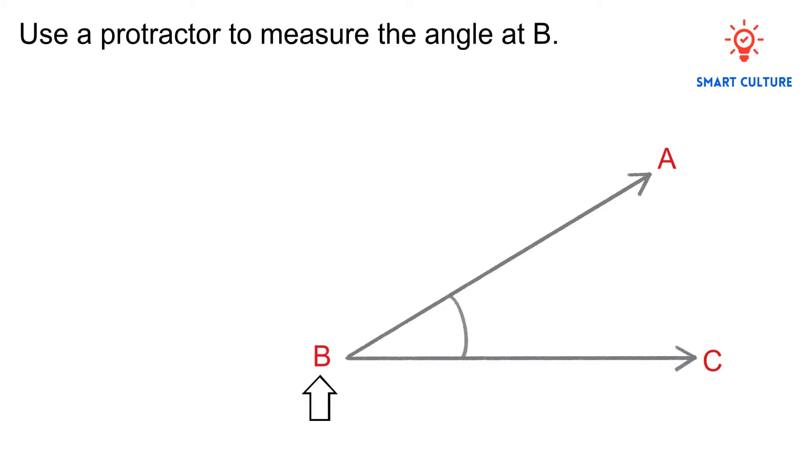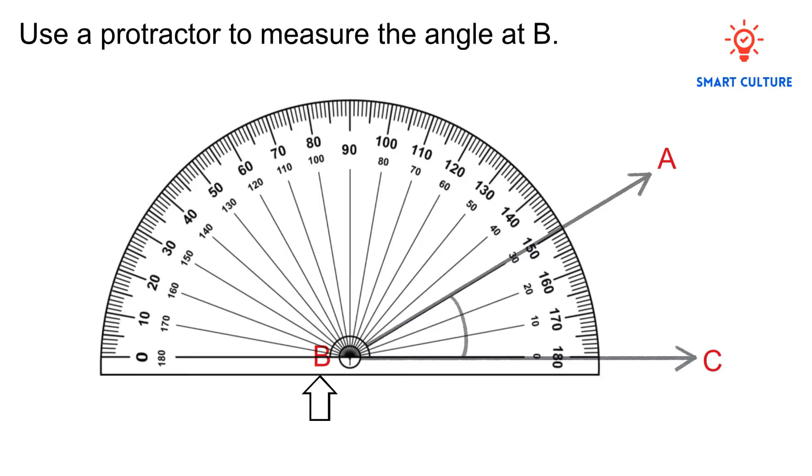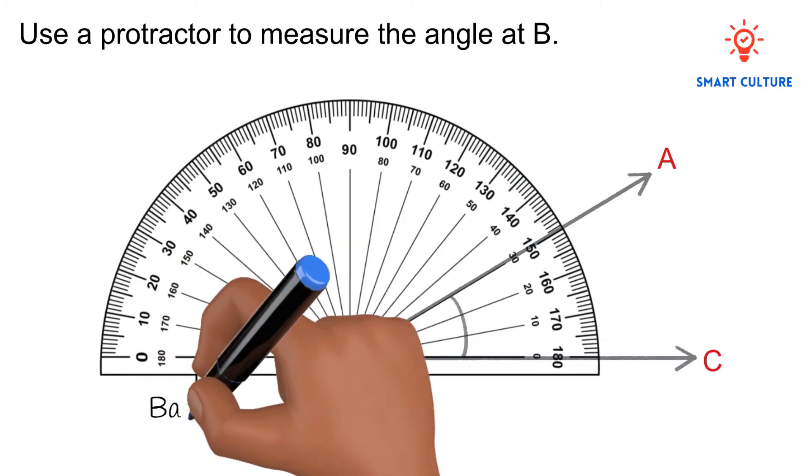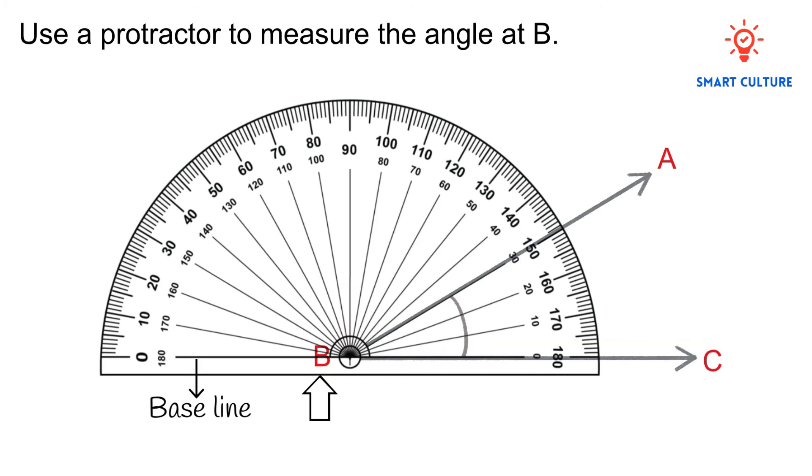Position the horizontal line segment BC. Remember, the baseline of the protractor must lie on line segment BC. As ABC is an acute angle, it must measure less than 90 degrees.